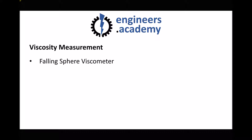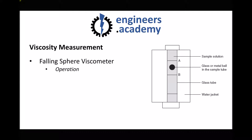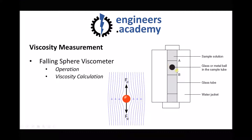Another type is the falling sphere viscometer. We have a small sphere of known diameter and known density, and a tube containing the fluid whose viscosity we want to measure. We drop the ball and start the stopwatch when it passes an index mark. There's a water jacket around the tube so we can measure viscosities at different temperatures. Once we have the time in seconds we can calculate viscosity. The calculation is relatively complex, taking into consideration the diameter of the sphere, the density of the sphere, the density of the fluid, and the time.